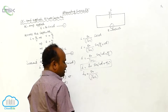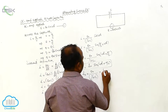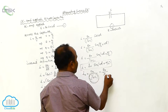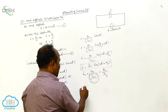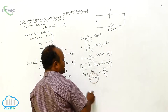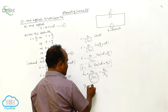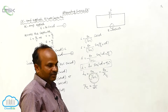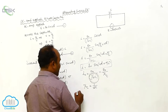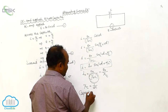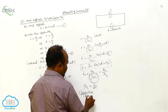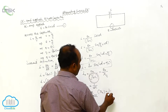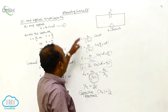Here I₀ = E₀ / (1/ωC). The quantity 1/ωC is represented by Xc, called capacitive reactance, where Xc = 1/ωC. This has the units of resistance, which is why it is called capacitive reactance.